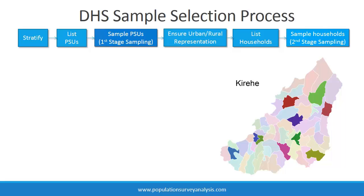Here I show a map of Korehe district. These are not actually village boundaries, they are sector boundaries, but I used the map to show how all PSUs are listed and then sampled in the first stage of sampling. The number of PSUs, or the size of the first stage sample, is often more important to the statistical power of the final sample than the total number of households or individuals sampled. I talk more about this in the lectures on survey analysis and Stata and summary statistics.